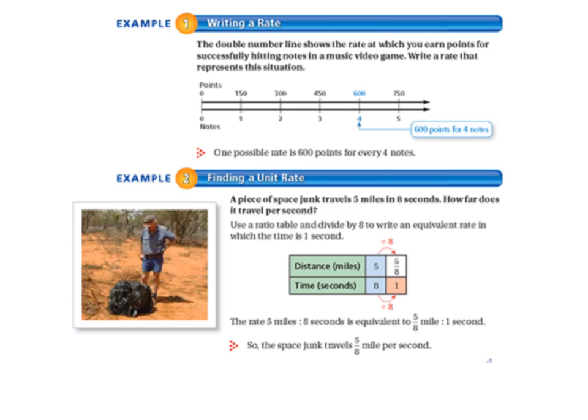In two notes, you earn 300 points. In three notes, 450 points. So it says one possible rate is 600 points for every four notes. But you could have written a rate for any of those spots along that number line.